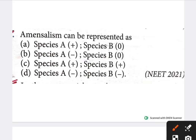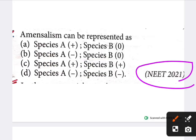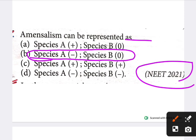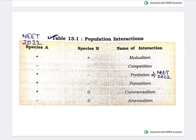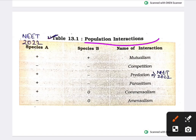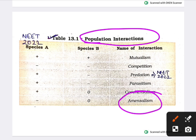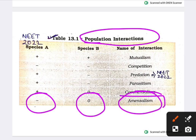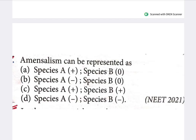Next question — NEET 2020: amensalism can be represented as species A negative and species B neutral. The answer is negative and zero (−, 0). Amensalism is a population interaction where one species is harmed and the other is neutral — it receives no benefit or loss.